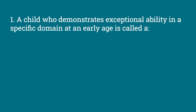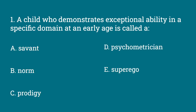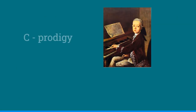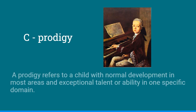A child who demonstrates exceptional ability in a specific domain at an early age is called a — and this would be C, a prodigy. A prodigy refers to a child with normal development in most areas, and exceptional talent or ability in one specific domain.